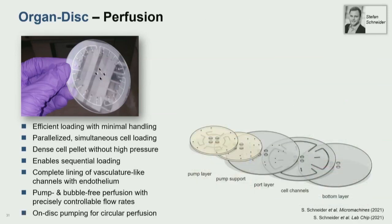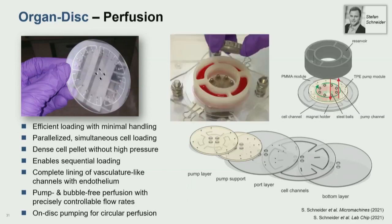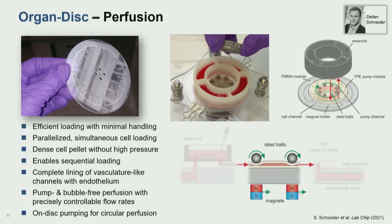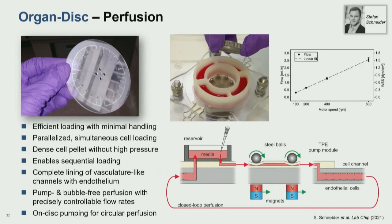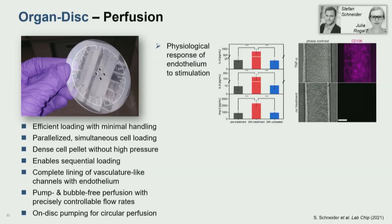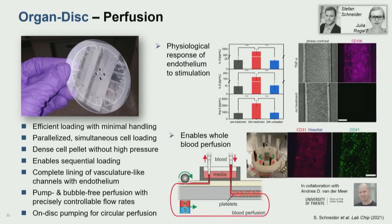This pump layer is made of a thermoplastic elastomer. We add a reservoir on top and steel beads on top of this pump layer, which has circular channels. Then we add a magnet underneath, keep the disc steady, rotate the magnet underneath, and thereby pull media from the reservoir, perfuse it into the channel, and back into the reservoir. This allows us to ramp up flow rates over a very wide range. We use this system to look at endothelial response to TNF-alpha stimulation, and also to perfuse whole blood, endothelializing all channels and looking at platelet adhesion.